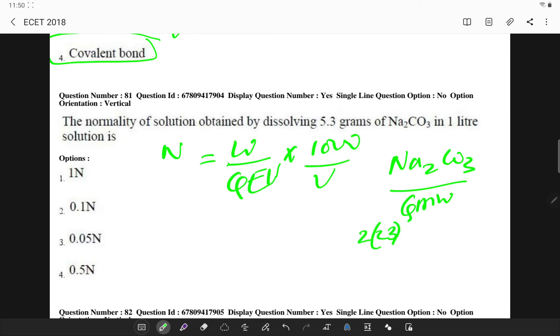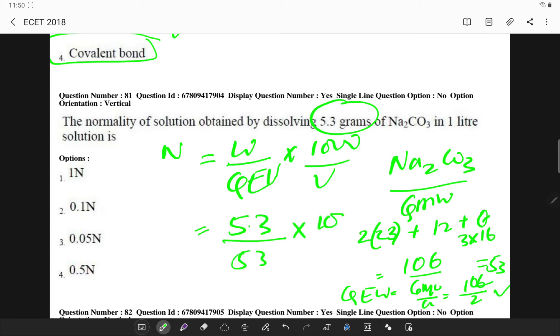For Na₂CO₃, if I have to calculate the gram molecular weight, so 2 times Na molecular weight is 23 plus 12 for carbon and oxygen is 3 times 16, if I sum it up I will get 106. So the equivalent weight will be 106 divided by 2 which is 53. So here n will be 5.3 because the weight is given as 5.3 and we got equivalent weight as 53, times 1000 divided by 1000, so it is 0.1 normal.